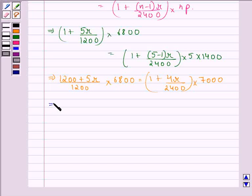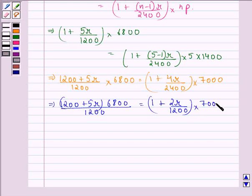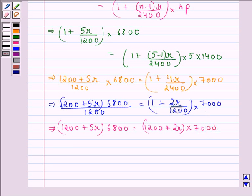This implies (1200 + 5R) times 6800 divided by 1200 equals (1 + 2R/1200) times 7000. This further implies (1200 + 5R) times 6800 equals (1200 + 2R) times 7000, which simplifies to (1200 + 5R) times 68 equals (1200 + 2R) times 70.